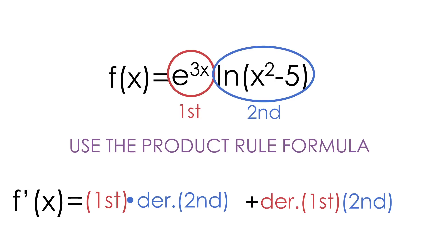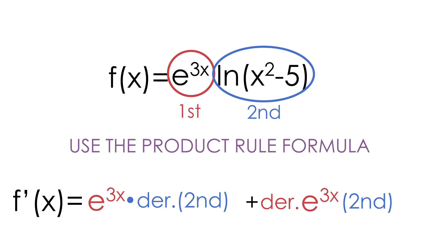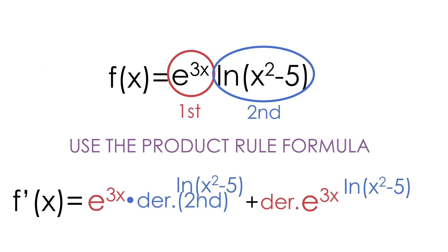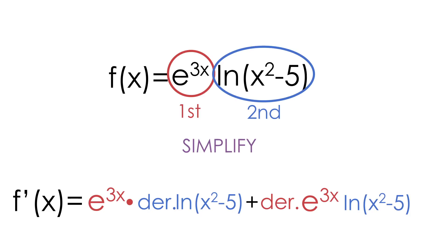Now the only thing we need to do is plug in our first thing, E to the 3x, everywhere we see the word first, and plug in our second thing, the natural log of x squared minus 5, everywhere we see the word second. Now that we have plugged everything into our formula, the only thing we have to do is simplify this as much as possible.